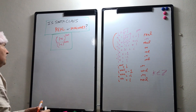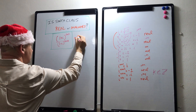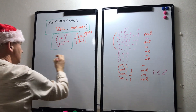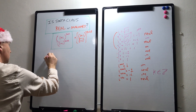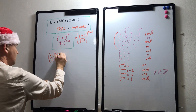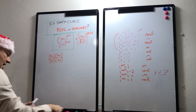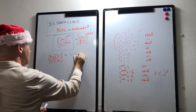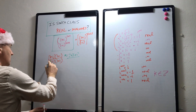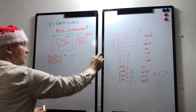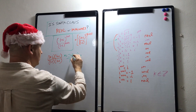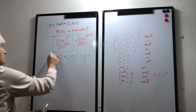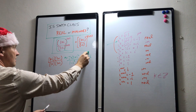Now let's go back to the expression to see if Santa Claus is real or imaginary. Let's rewrite this as (1 + i)/(1 - i) to the power of 2023 — it's the same thing. To evaluate (1 + i)/(1 - i), we multiply top and bottom by the conjugate of (1 - i), which is (1 + i). So we have (1 + i)(1 + i) = 1 + 2i + i² over (1 - i)(1 + i) = 1 - i². Since i² = minus 1, the numerator becomes 2i and the denominator becomes 2. So (1 + i)/(1 - i) simplifies to i.